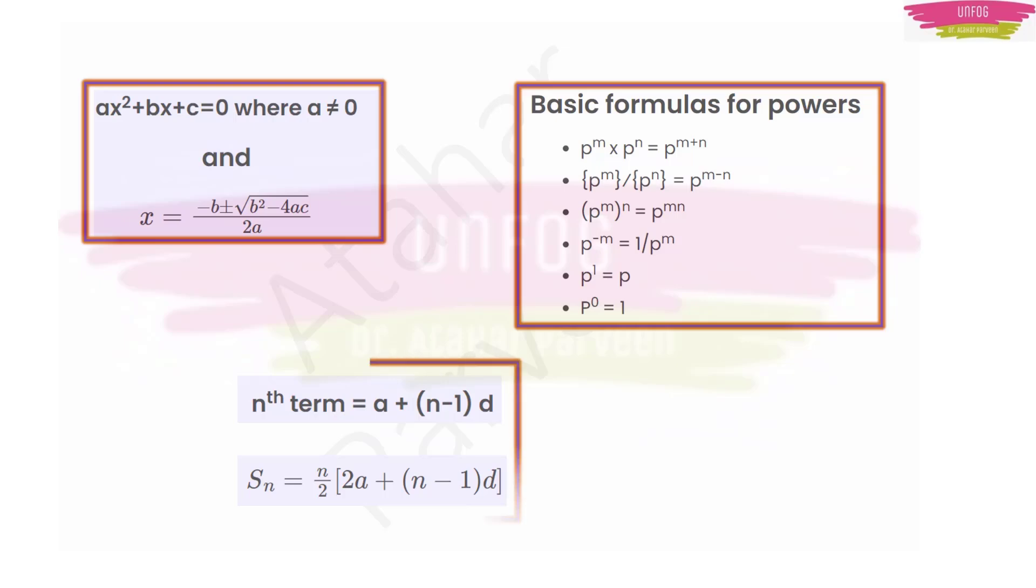Next, you have this arithmetic progression. You have nth term, which is a + (n-1)d. And sum of the terms will be (n/2)[2a + (n-1)d].